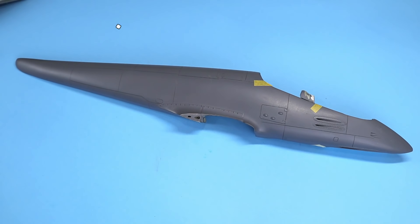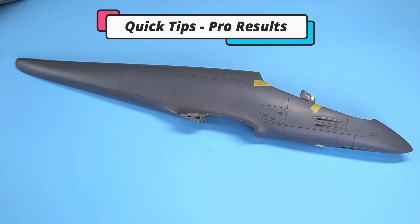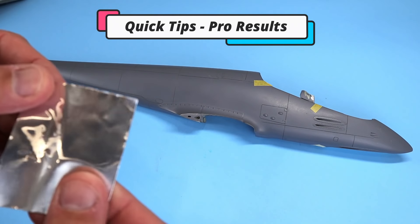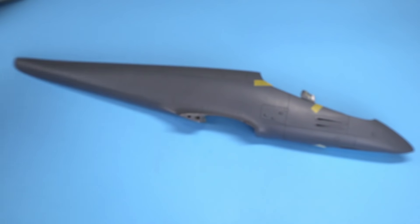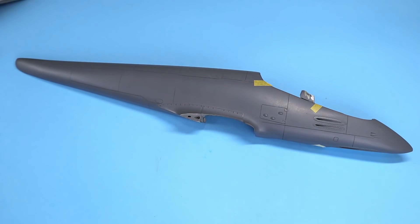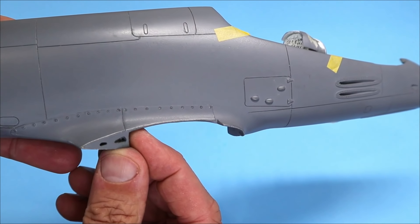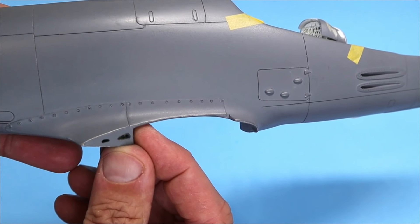So that'll about do it for this episode of Quick Tips Pro Results, where we took a look at using aluminum tape to create raised panel surface detail on your model projects. I appreciate you tuning into the channel. Have a good one.